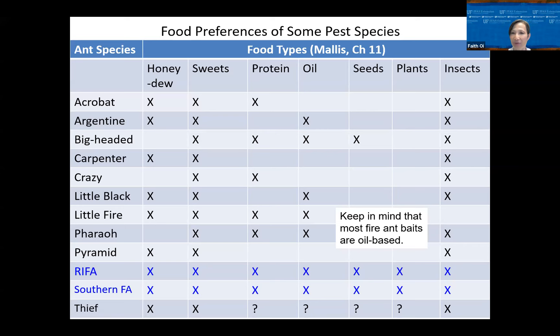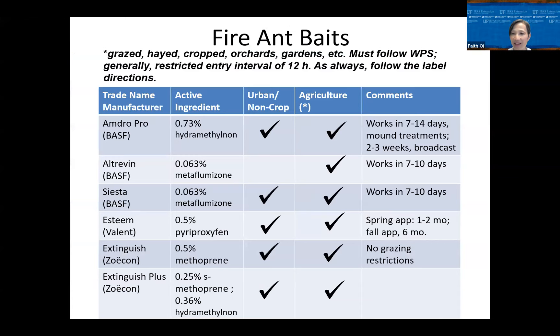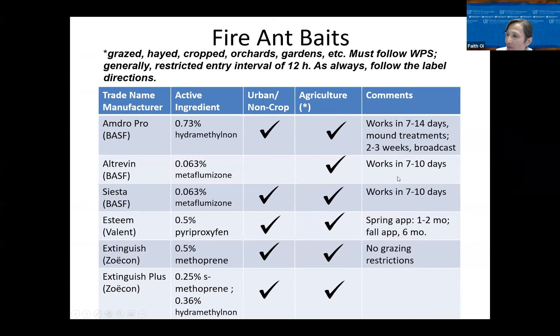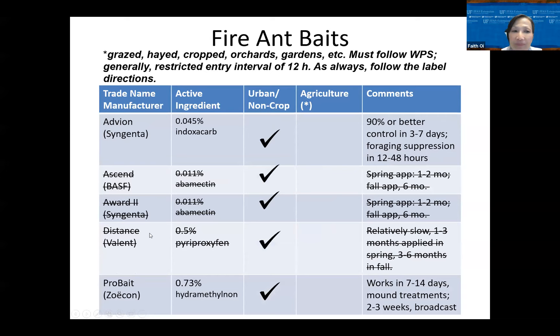Here are the recommended baits. Be careful about where you put them out — urban versus non-crop versus agriculture. The baits are changing all the time; you may find products on the market that manufacturers are no longer supporting. Just make sure you follow the label. Regarding bait toxicity to pets: I wouldn't let pets eat it on purpose, but it has much less active ingredient than any other control product. The USDA calculated that baiting results in about 99% reduction of active ingredient into the environment compared to doing a drench.